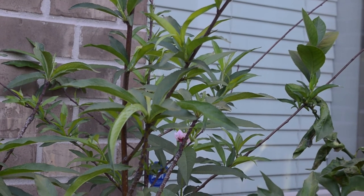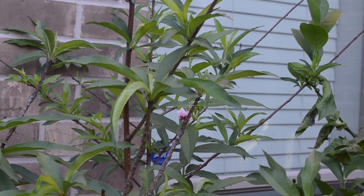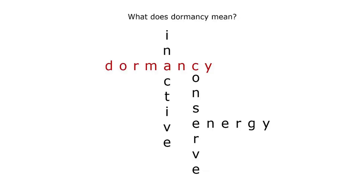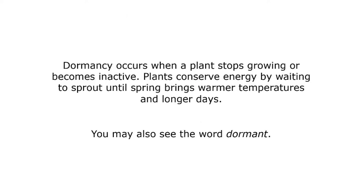Can you see that flower? That's where a new peach will grow. What does dormancy mean? Take a look at those keywords: inactive, conserve energy. Dormancy occurs when a plant stops growing or becomes inactive. Plants conserve energy by waiting to sprout until spring brings warmer temperatures and longer days. You might also see the word dormant.